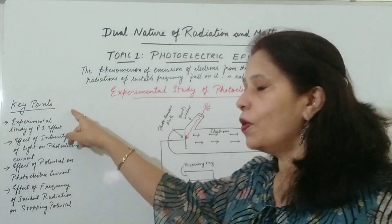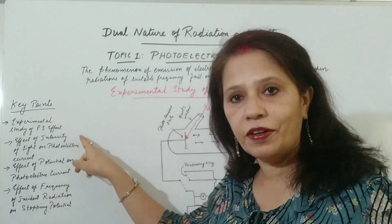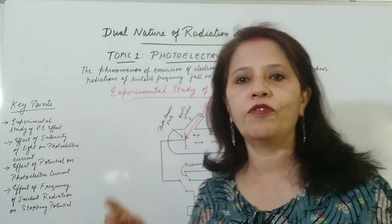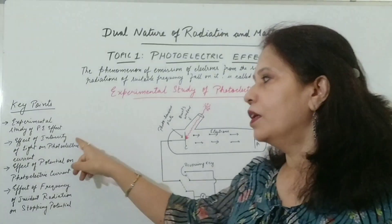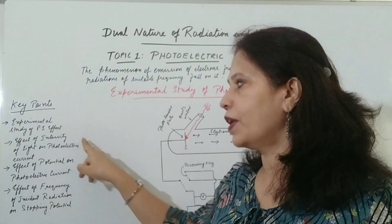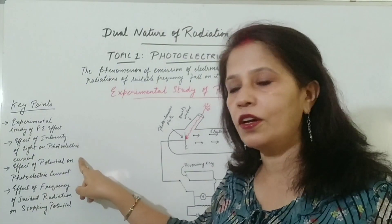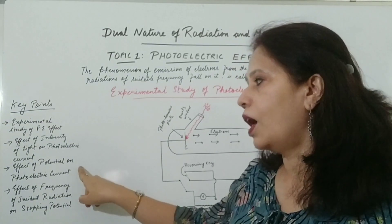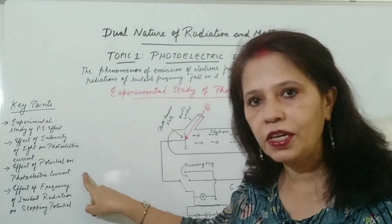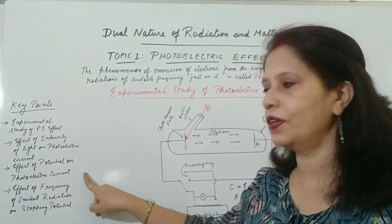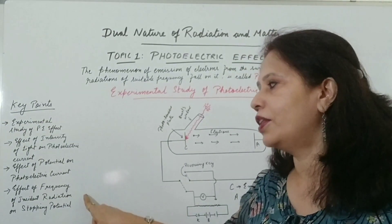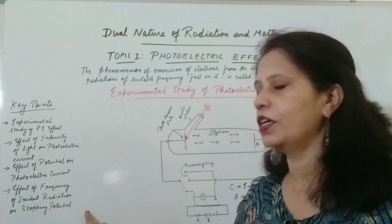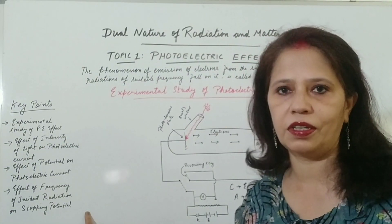The key points which will be covered today are: first, experimental study of photoelectric effect; then, effect of intensity of light on photoelectric current; after that, effect of potential on photoelectric current; then, effect of frequency of incident radiation on stopping potential.